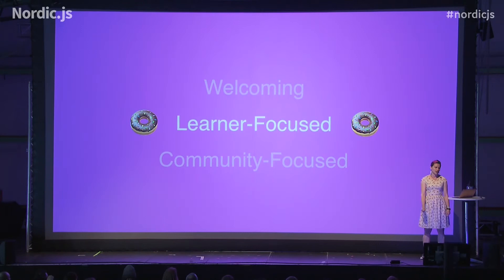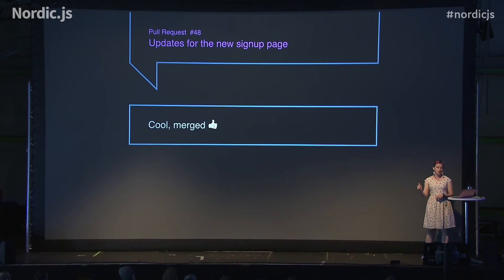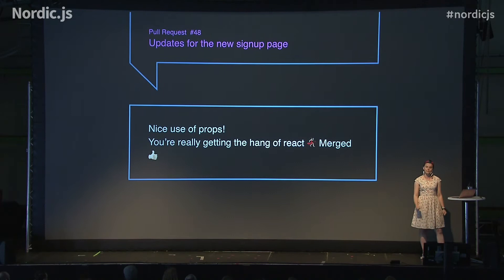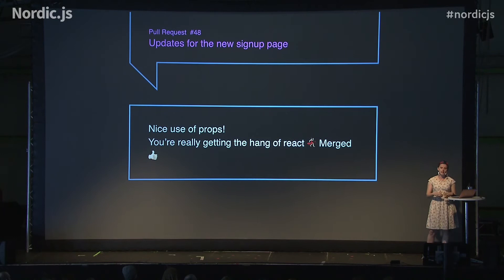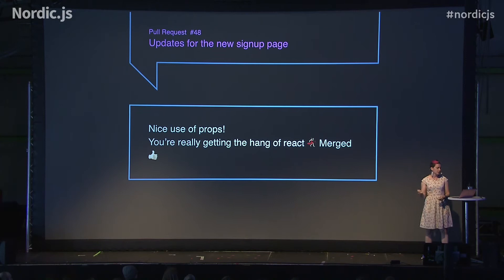Next we have learner-focused strategies. The first is legitimation — telling learners and members that the thing they've been working on is legitimate. It's being encouraging to people working in JavaScript or on a particular project, like positive reinforcement. For example, rather than just commenting 'cool, merged' on a pull request, we could say 'nice use of props, you're really getting the hang of React, merged.' It's not much longer, but it makes clear to the author that their work is a good use of the language. We can also use this strategy when someone tries a new approach that didn't work, or on a pull request that won't be merged — these scenarios shouldn't delegitimize the work done. We can make sure authors still feel positive about working in JavaScript just by changing how we talk about it.